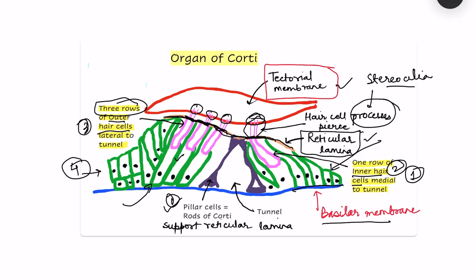The top of the stereocilia is embedded in the tectorial membrane. This is very important for the transduction process — the conversion of auditory pressure waves into electrical signals by the hair cells, which are the transducing cells or the receptors of hearing. There is also a tunnel of Corti, which is bounded by the pillar cells — the rods of Corti — on either side.